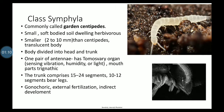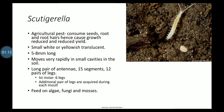They reproduce by indirect fertilization and undergo indirect development. An example is Scutigerella. Scutigerella is a garden centipede of economic importance. Because they are herbivores, they feed on the roots, seeds, and root hairs of cultivated plants.